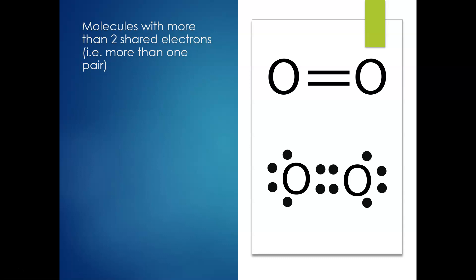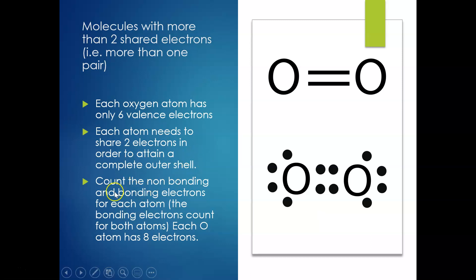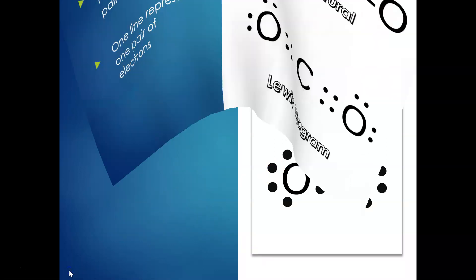If a molecule has more than one shared electron pair — for example oxygen — oxygen has only six valence electrons. Each atom needs to share two electrons in order to attain a full outer shell, giving one, two, three, four, five, six, seven, eight electrons. Counting the non-bonding and bonding electrons for each atom — bonding electrons count for both atoms — each oxygen atom now has eight electrons. There are two lots of bonding, so on our structural diagram we have two lines representing the double bond. Going back to carbon dioxide on the previous slide, we've got two shared bonds on either side.